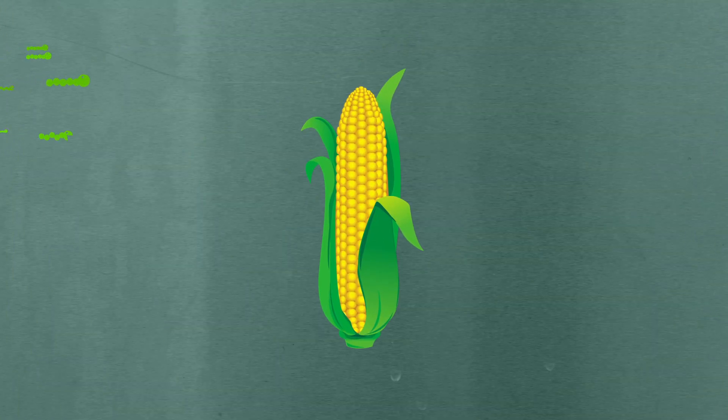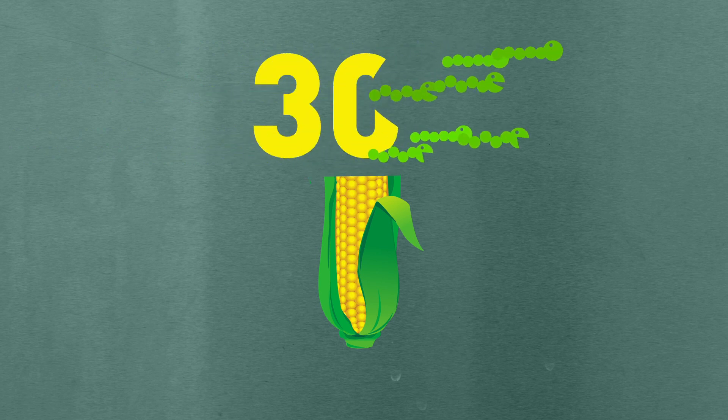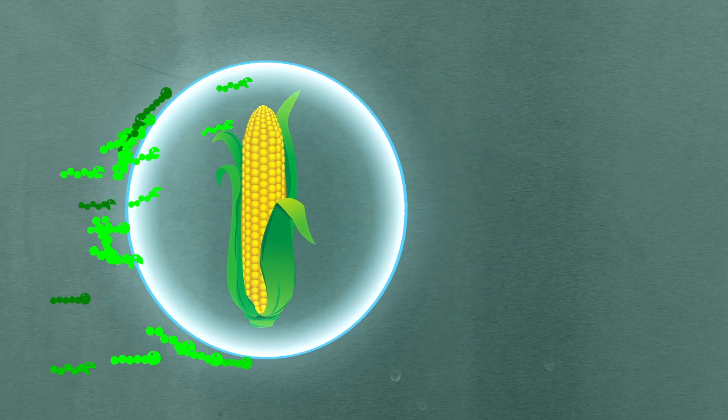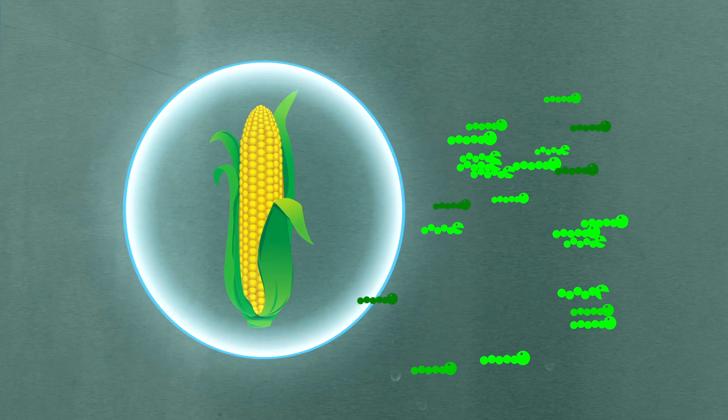Around 30% of food is lost before it can be harvested because it is eaten by pests. GM crops can help farmers target the pests before food is destroyed.